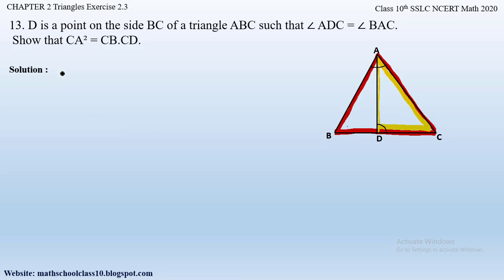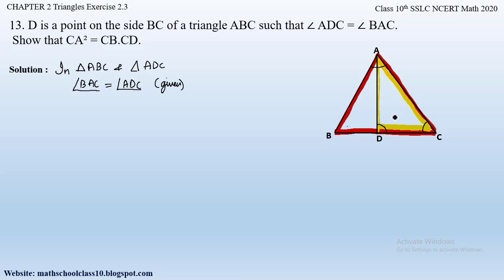In triangle ABC and triangle ADC: first, angle BAC in triangle ABC is equal to angle ADC in triangle ADC — this is what is given. Also notice that angle C is common to both triangles, so angle ACB equals angle ACD. That is the common angle. So we have got two pairs of equal angles in triangles ABC and ADC.